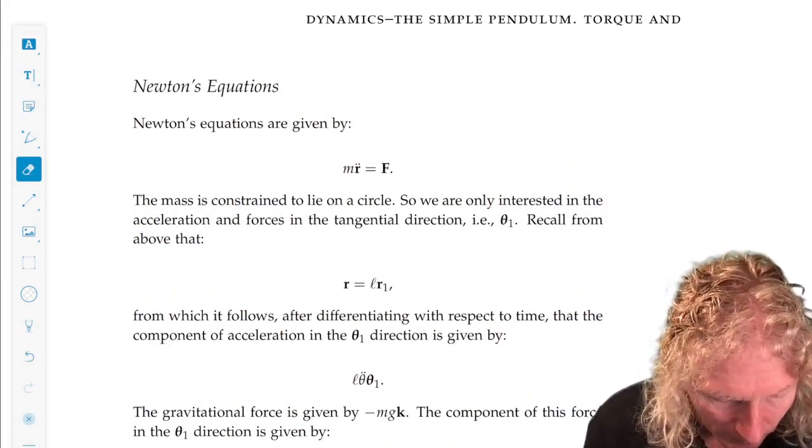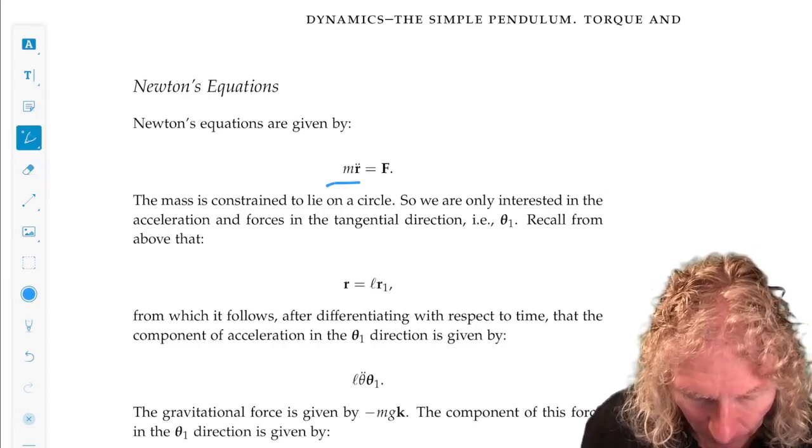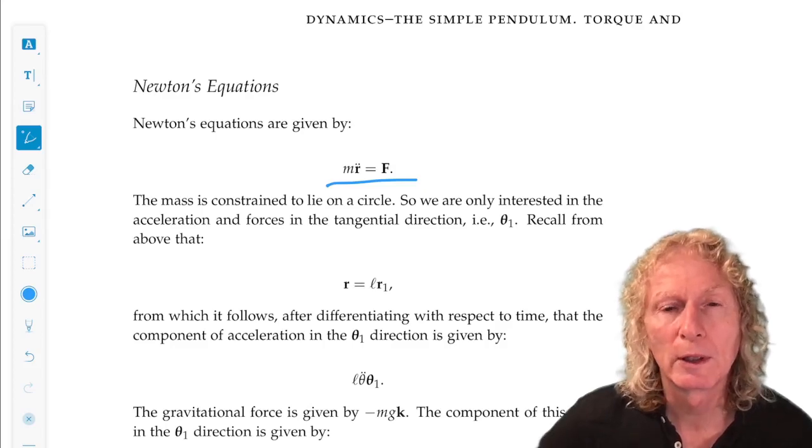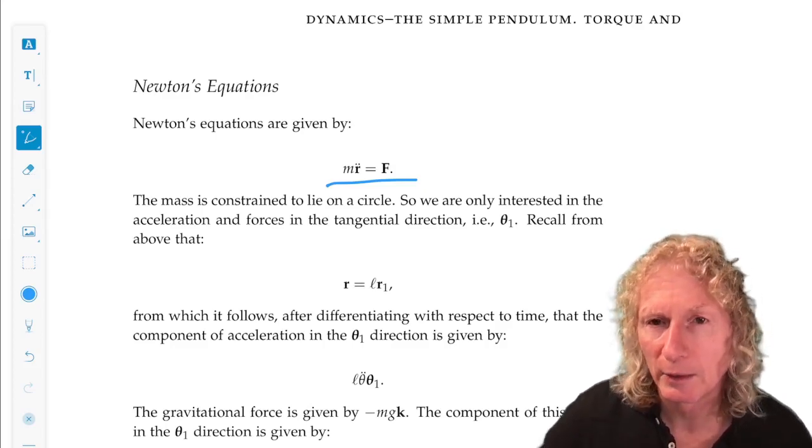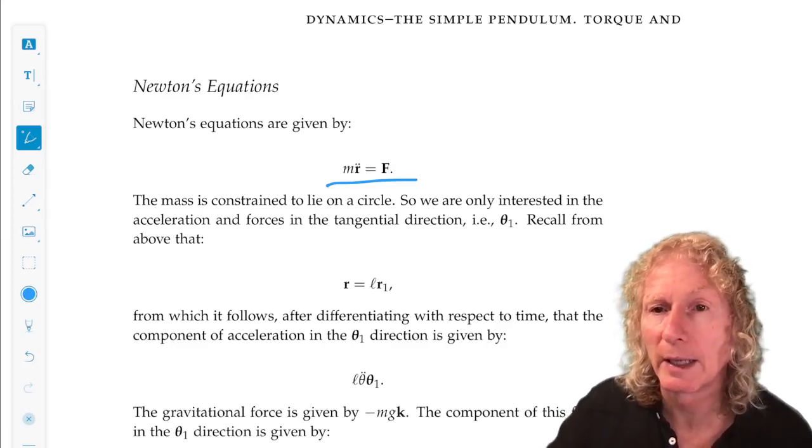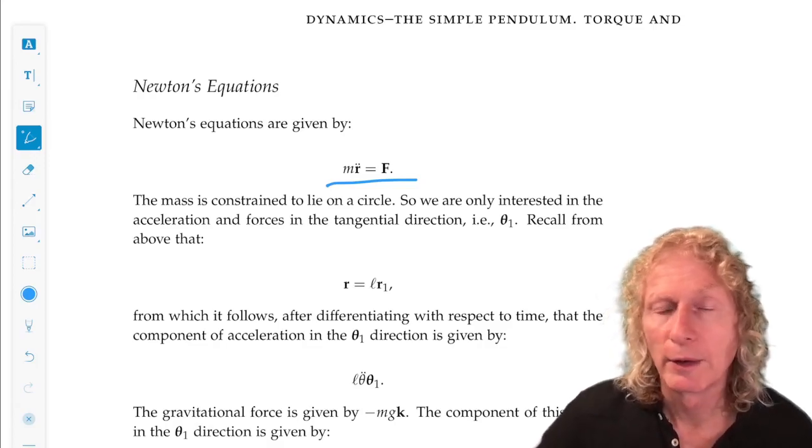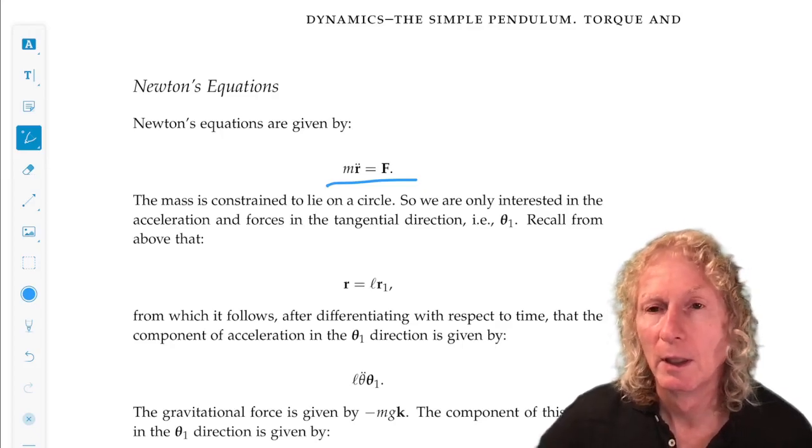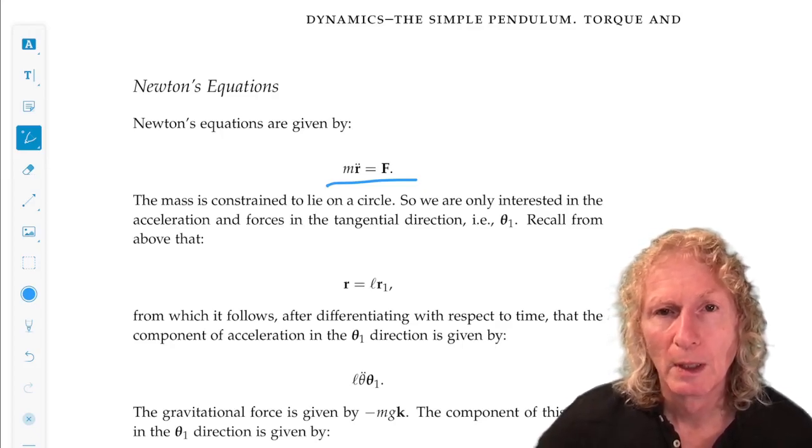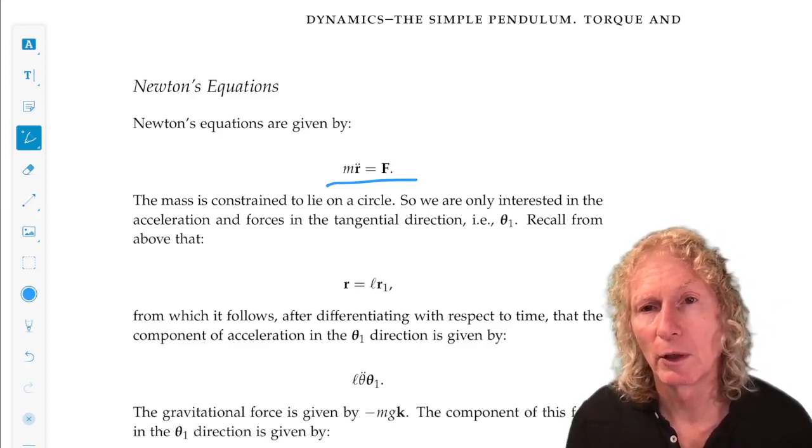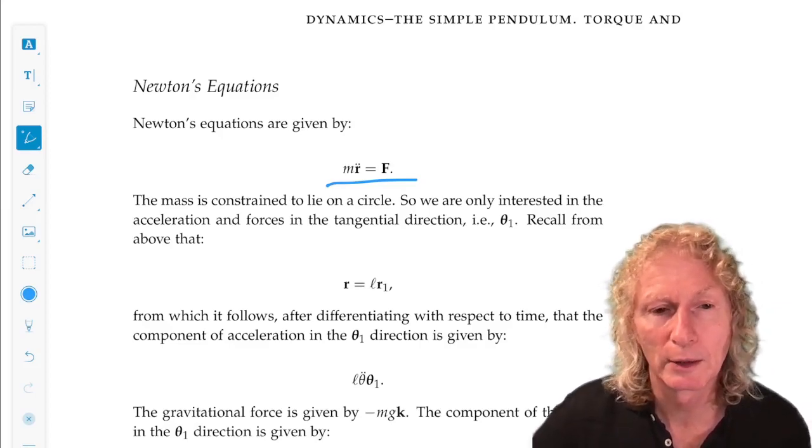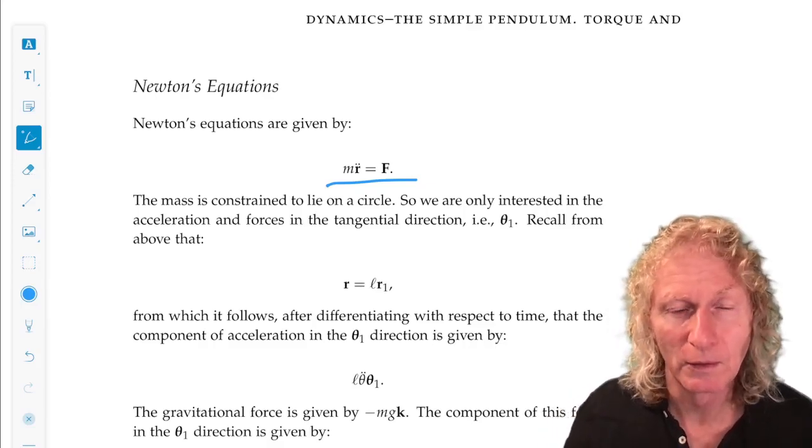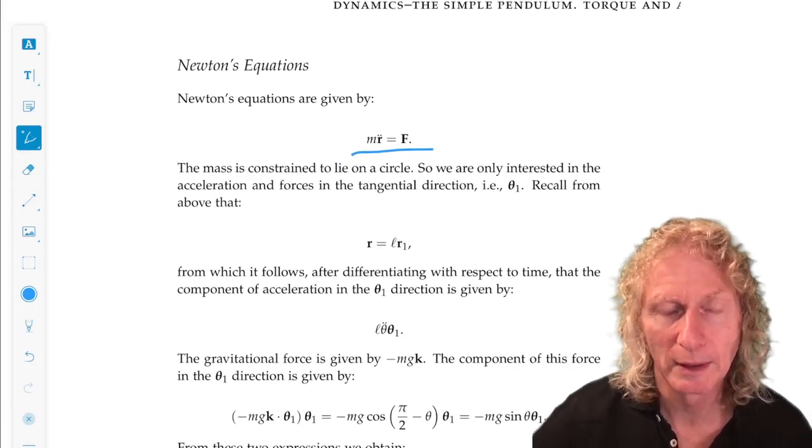Newton's equation, F equals ma, so I need to compute the force and the acceleration. We're going to compute the force and acceleration only in the tangential direction, the theta 1 direction, because nothing moves in the r direction. The massless wire is constant in length L.